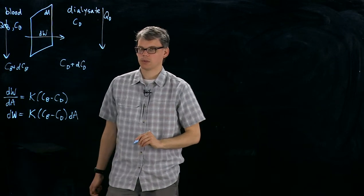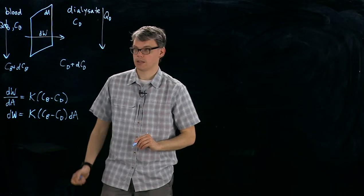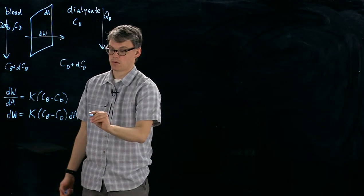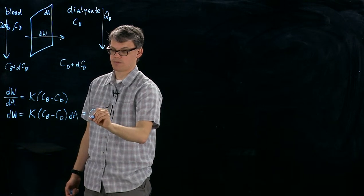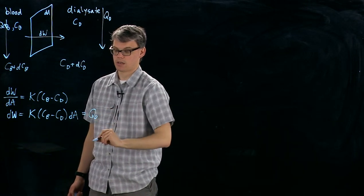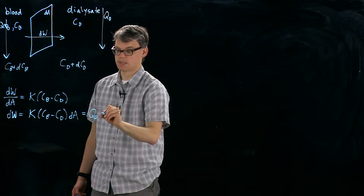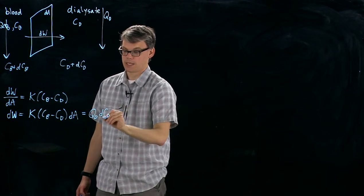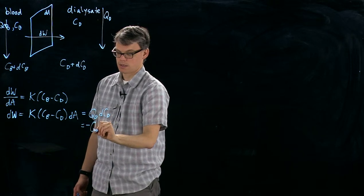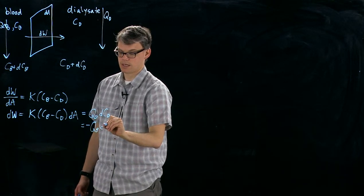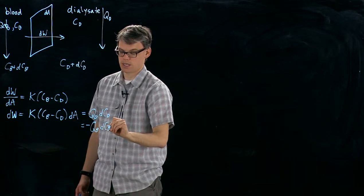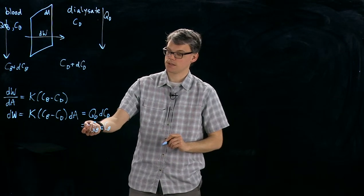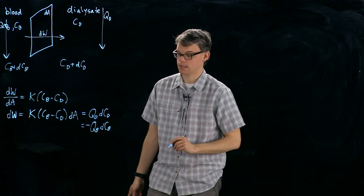Well, we can also write dW in terms of the flow and this change in concentration. And so on the dialysate side, we have the flow rate of the dialysate times that small change in the concentration. And that's also going to be equal to minus the flow rate on the blood side times the little change in concentration on the blood side. And the minus sign is just because the solute is moving from the blood into the dialysate.